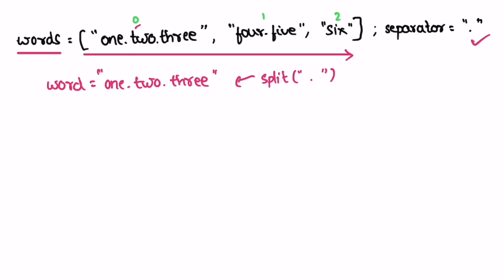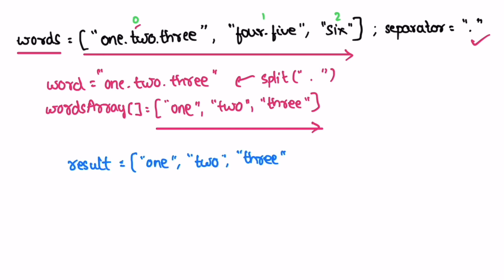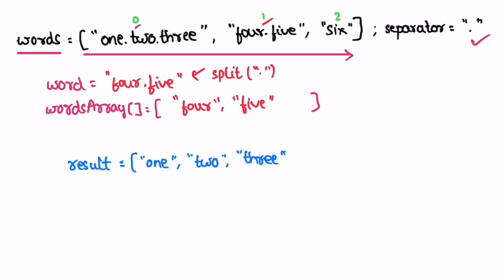After splitting, we form the words array which will contain three separate strings for this word. Now we iterate through this words array and check if each string is not an empty string — because the output should not contain any empty strings. If it is not empty, we add it into the result list. We add those three strings, then move to the next iteration where i equals one. We access the next string, apply the split method, and get two words which are added into the words array.